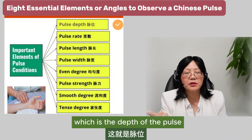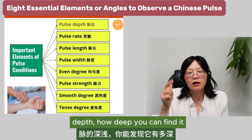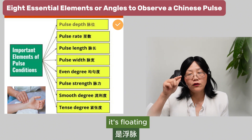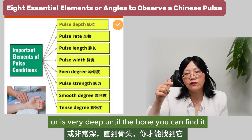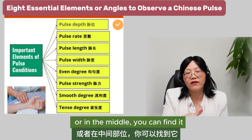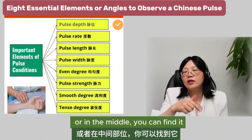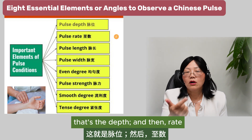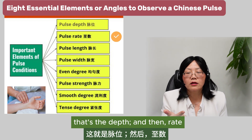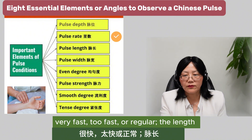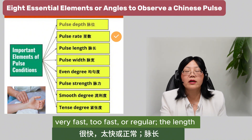The first is the depth of the pulse — how deep you can find it. It could be floating, very superficial, or very deep near the bone, or somewhere in the middle. The second is rate: how fast — very slow, very fast, or regular.